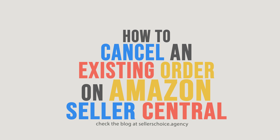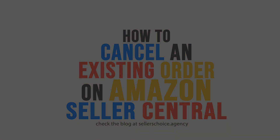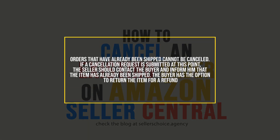If a seller needs to cancel an order — either because the item will not be shipped on time, because the item is out of stock, or for any other reason — and the item has not been shipped, he can do it through his Seller Central account. Orders that have already been shipped cannot be canceled. If a cancellation request is submitted at that point, the seller should contact the buyer and inform him that the item has already been shipped. The buyer has the option to return the item for a refund, and that's for another tutorial.